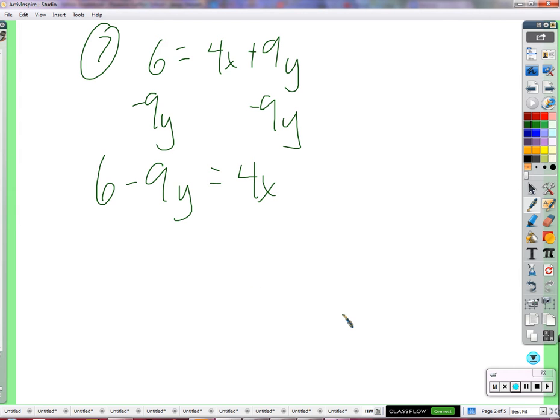So 6 minus 9y equals 4x. Now what would you do? Grady? Minus 6 on both sides. So we just have negative 9y on the side. And then we have 4x minus 6.